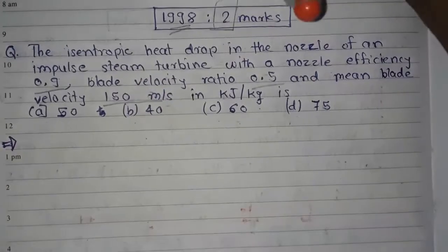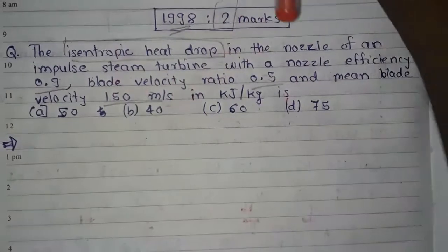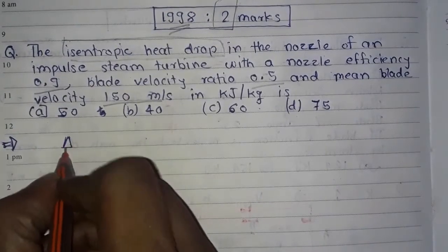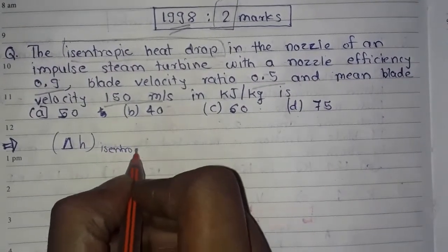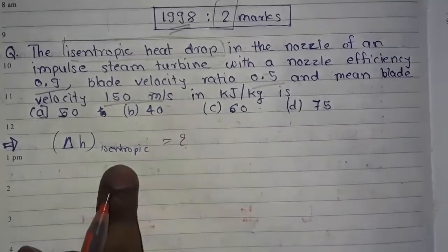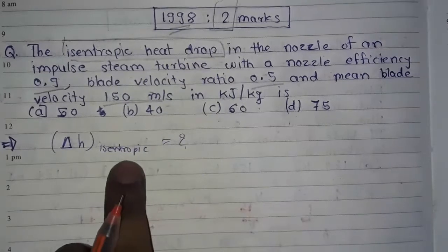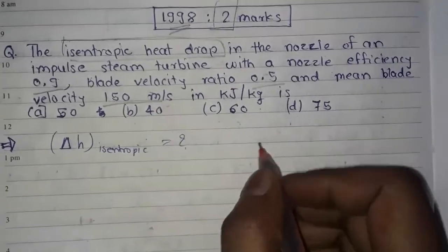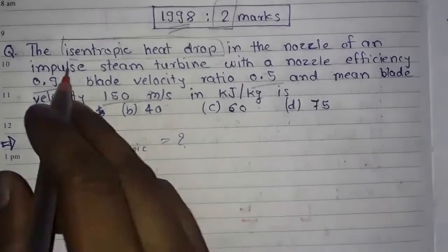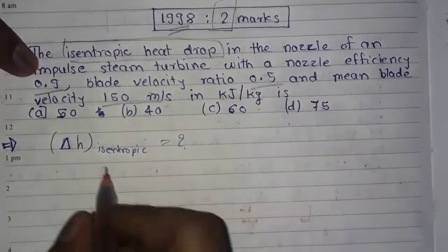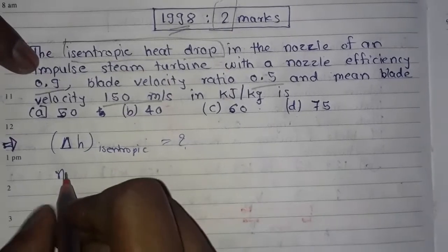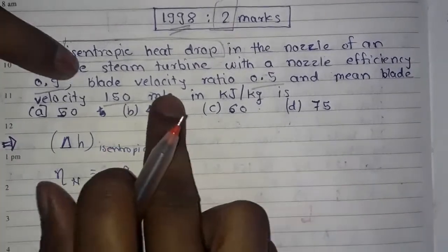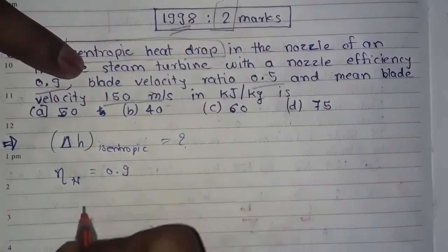Here we have to find the isentropic heat drop in the nozzle of an impulse turbine — that is delta h isentropic, the isentropic enthalpy drop. The given data is: first, nozzle efficiency of an impulse turbine, that is eta_n is equal to 0.9.